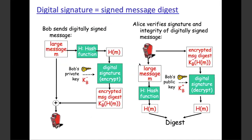Here is the working example: Bob sends a digitally signed message. The message is hashed using a hash function to create a digest. That signed message goes to Alice. Alice verifies the signature and integrity by using Bob's public key. She applies the hash function and checks that the digest value is exactly the same. If it matches, the data is authentic and unaltered.